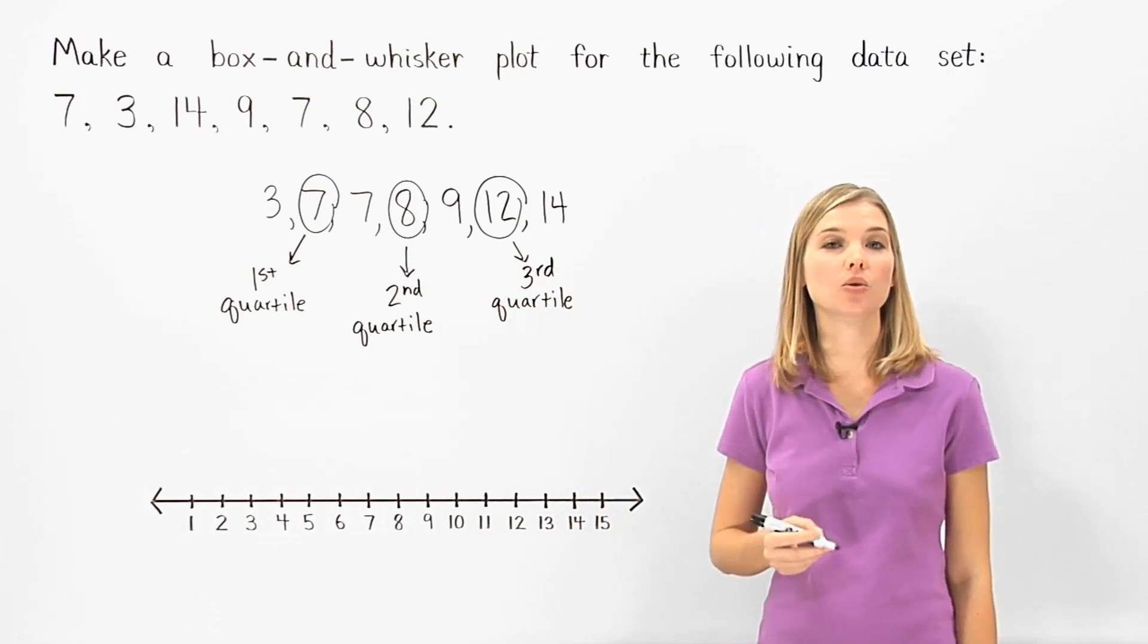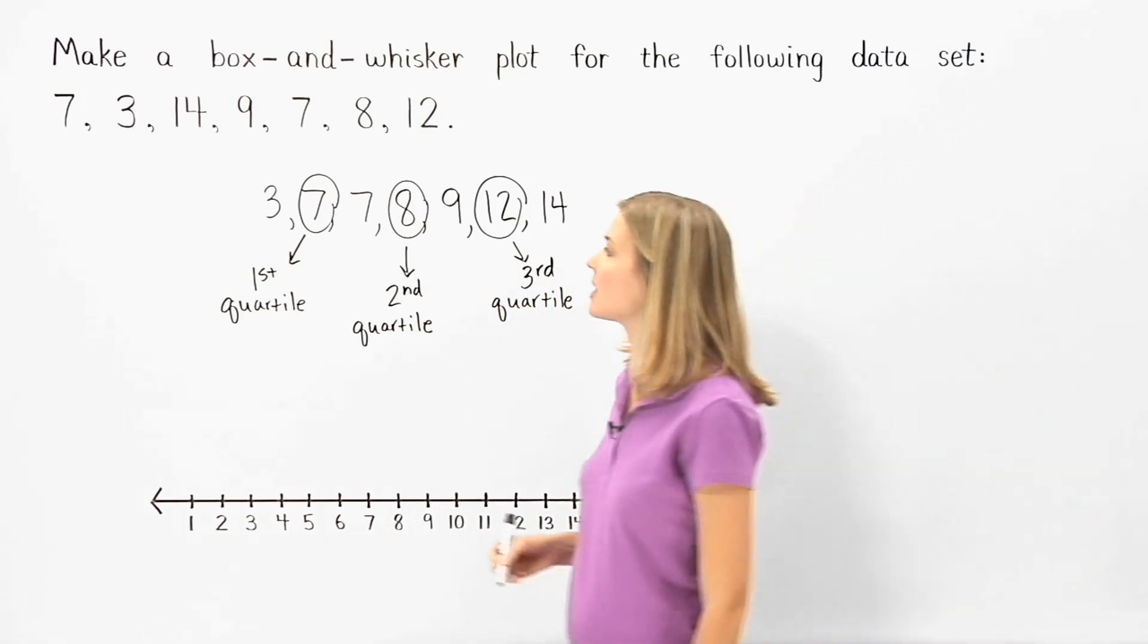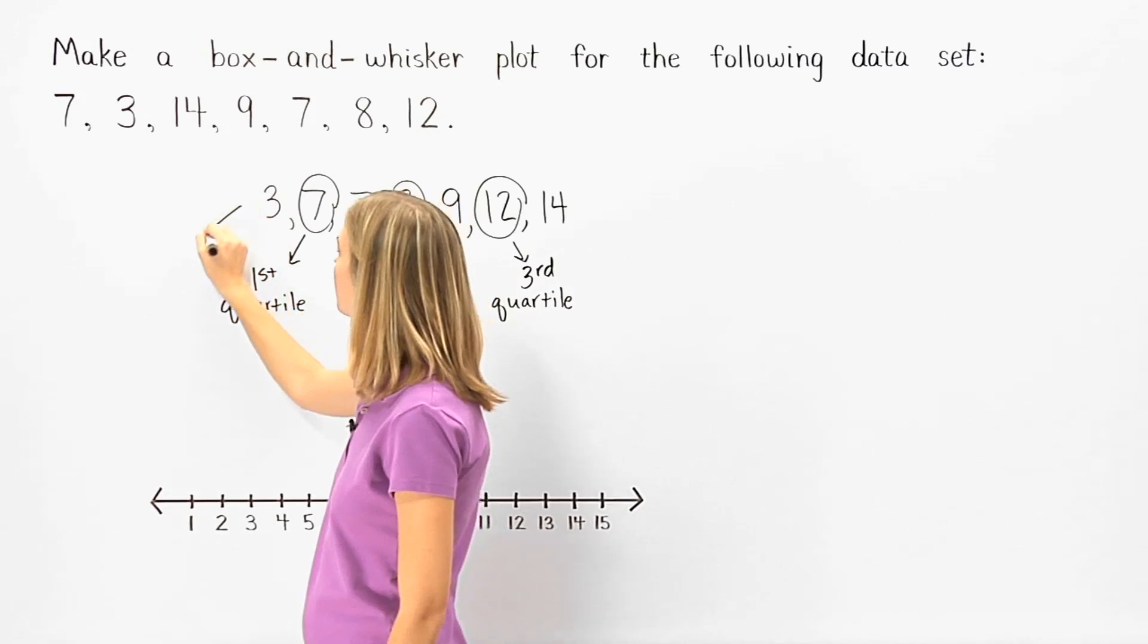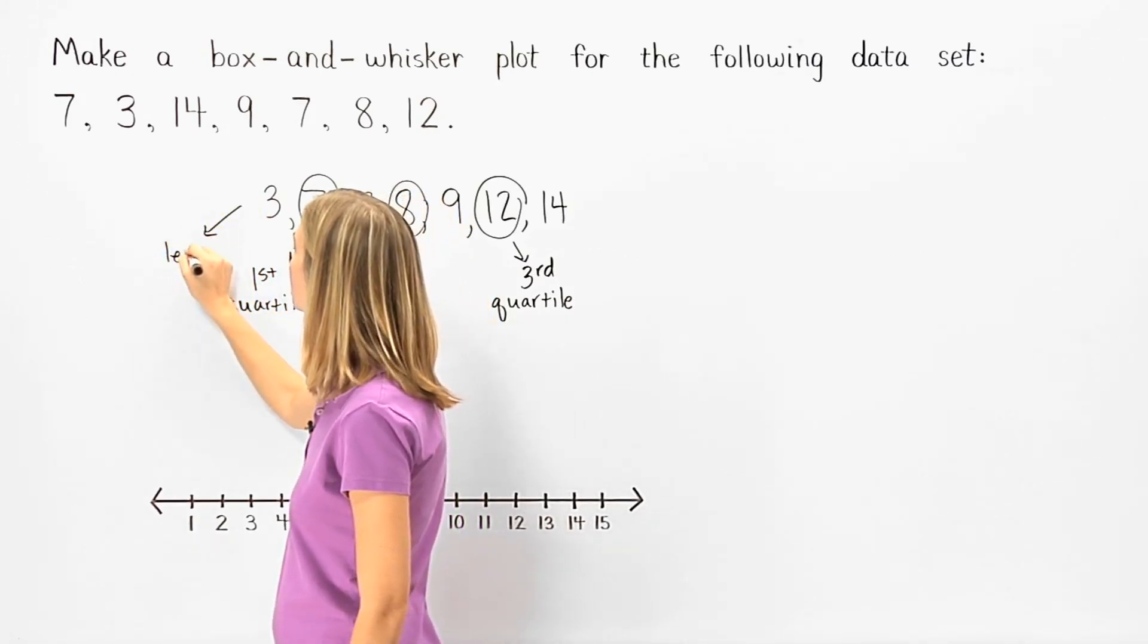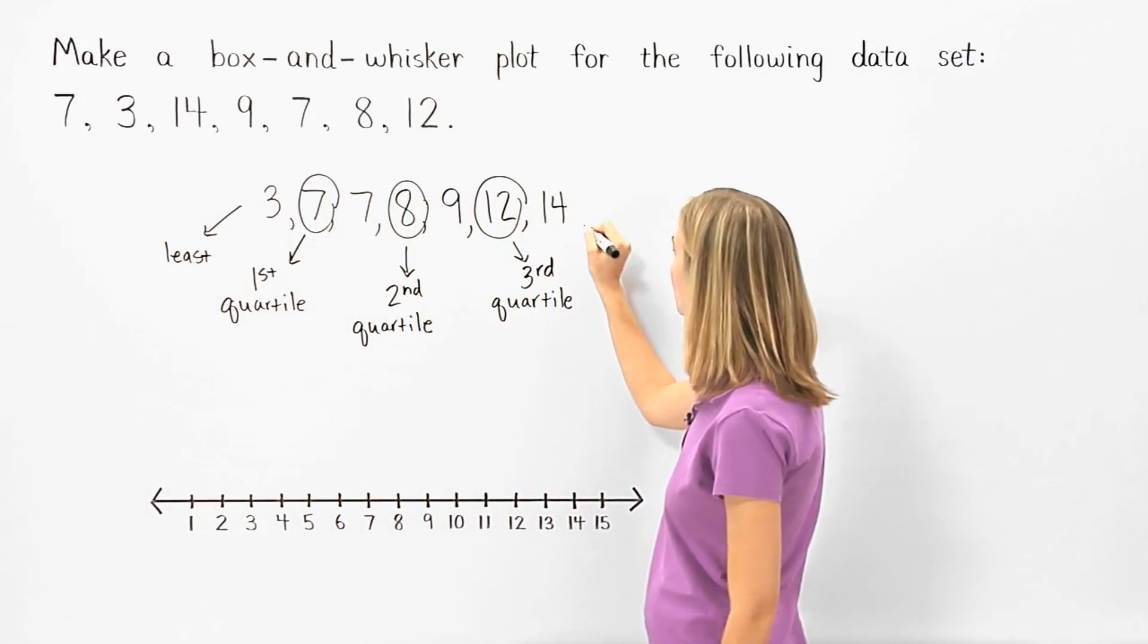Finally, we label the least and greatest numbers. And we can see that the least number is 3, and the greatest number is 14.